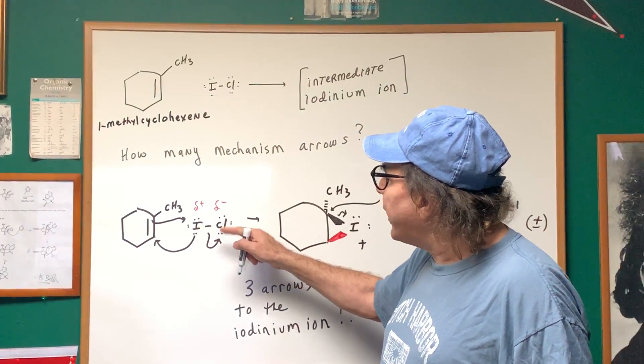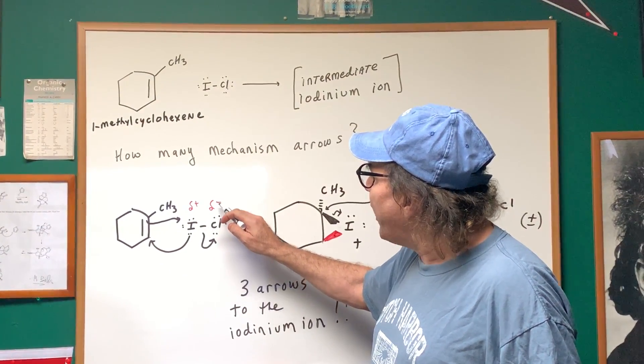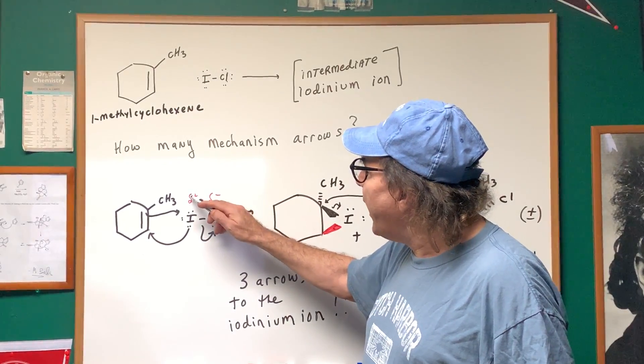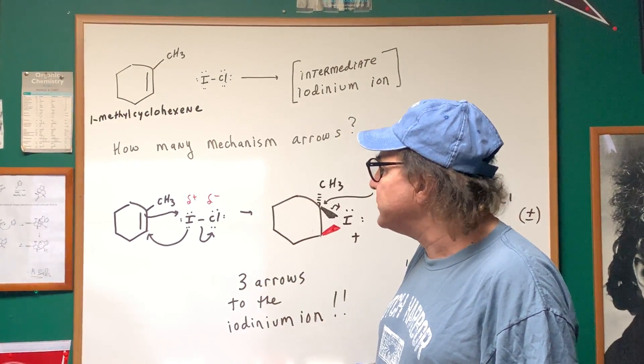And as you can see, I draw iodine chloride, but notice one side is positive and one side is negative. The chlorine is the negative side and the iodine is the positive side.